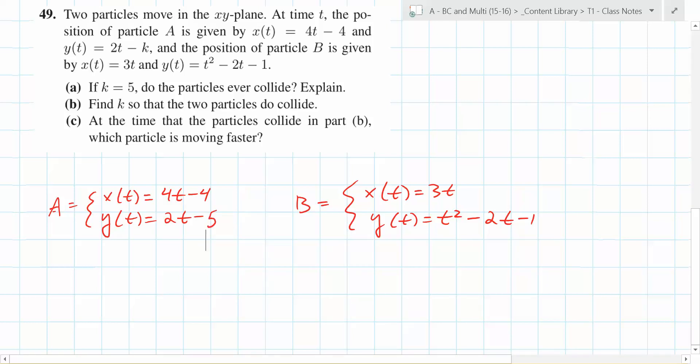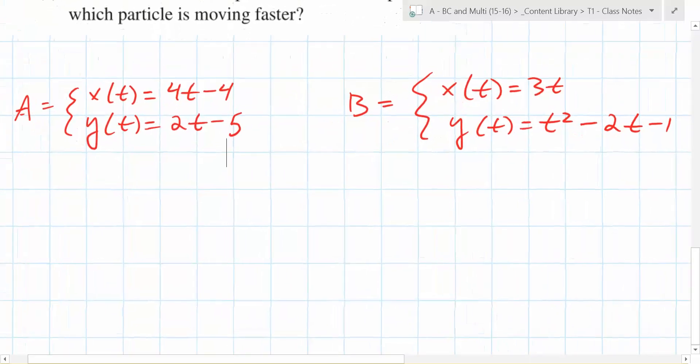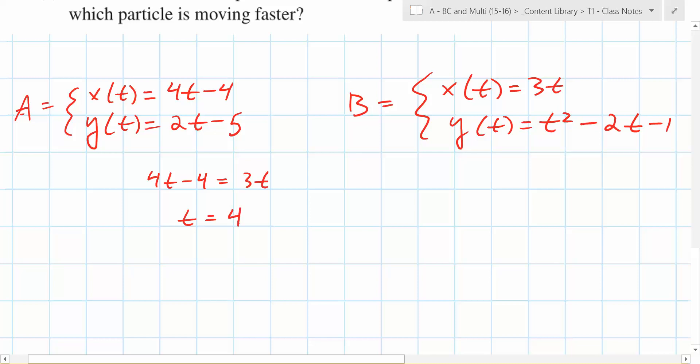So what should you do? They have to be at the same place at the same time. Set what equal to each other? Okay, so hold on. Let's do one thing at a time. So which one do you want to set first? Let's do x. Why are you doing x first? I would do x first. Yes. So you end up with t is equal to 4. Correct? Yeah. Right? So the only time the x coordinates are the same is when time equals what? 4.